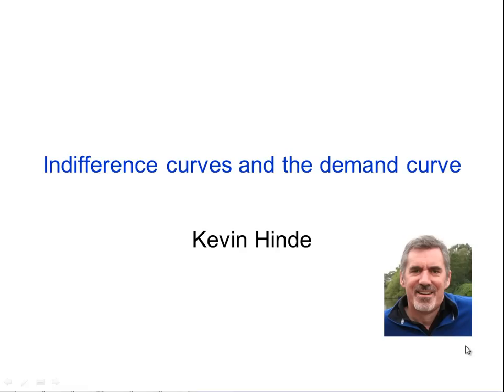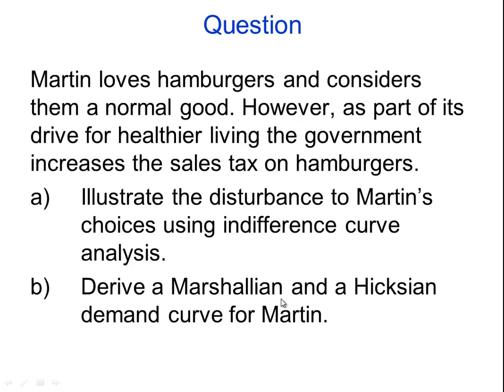The best way to look at this is to explore a question. The problem we've set here is a person called Martin. They love hamburgers and consider it to be a normal good. A normal good is something that as your income goes up, you buy more of it. That's quite important for when we look at what's called the income substitution effect. So Martin loves hamburgers and considers them a normal good. However, as part of its drive for healthier living, the government increases the sales tax on hamburgers, meaning the price of hamburgers is going to go up.